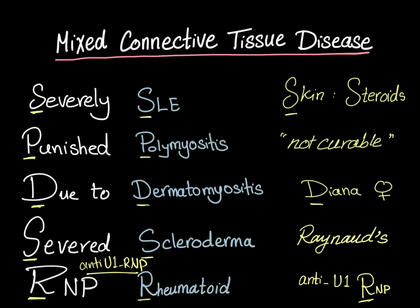We can also learn other things from each letter of the mnemonic. The S in 'severely' — remember that the skin symptoms can be treated by topical steroids. The P in 'punished' — punishment is bad, meaning this disease is not curable.